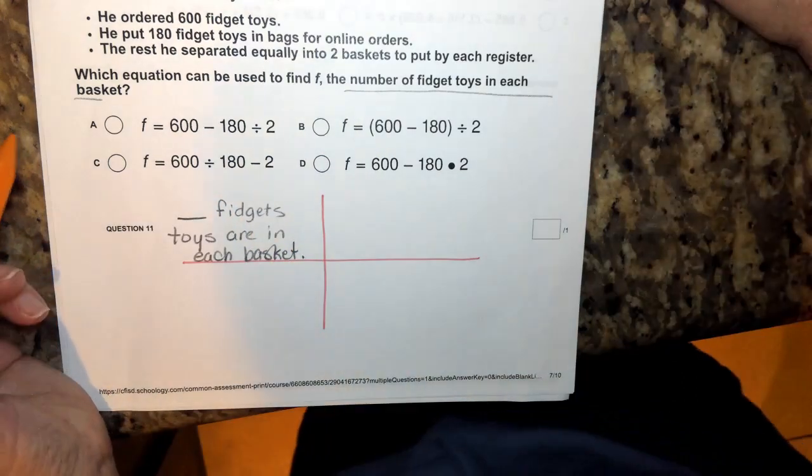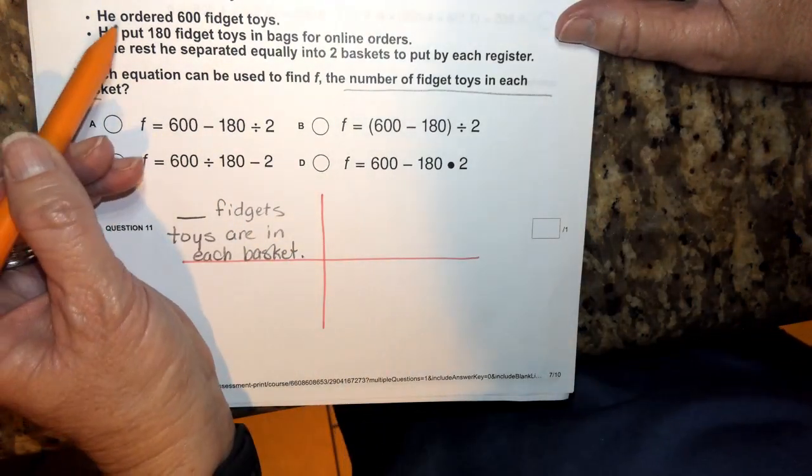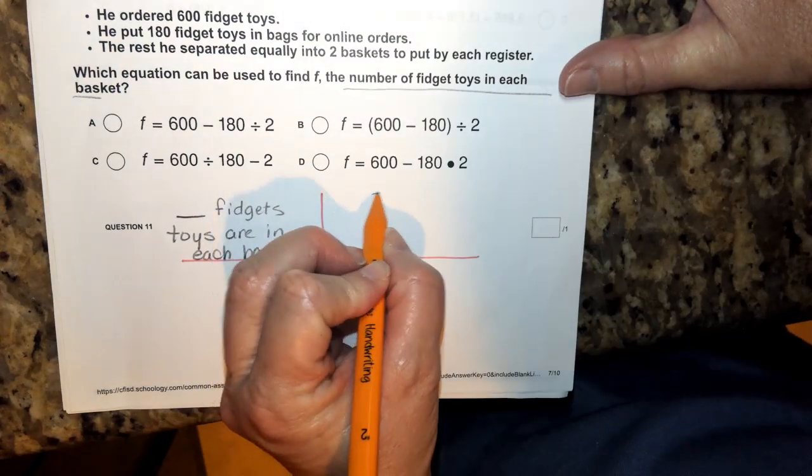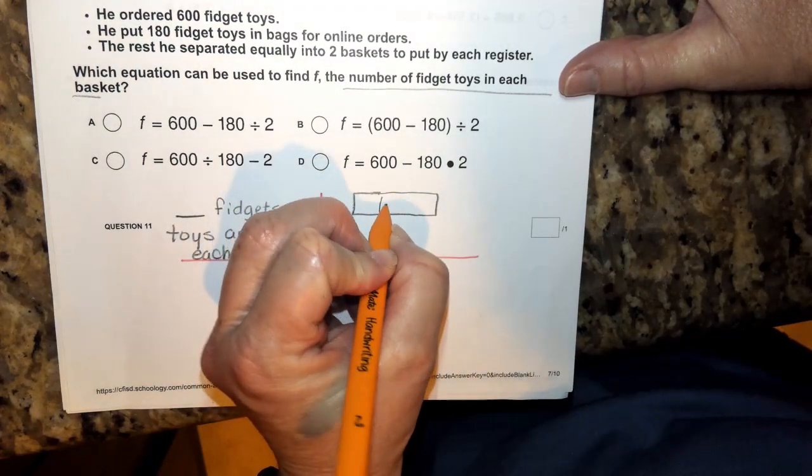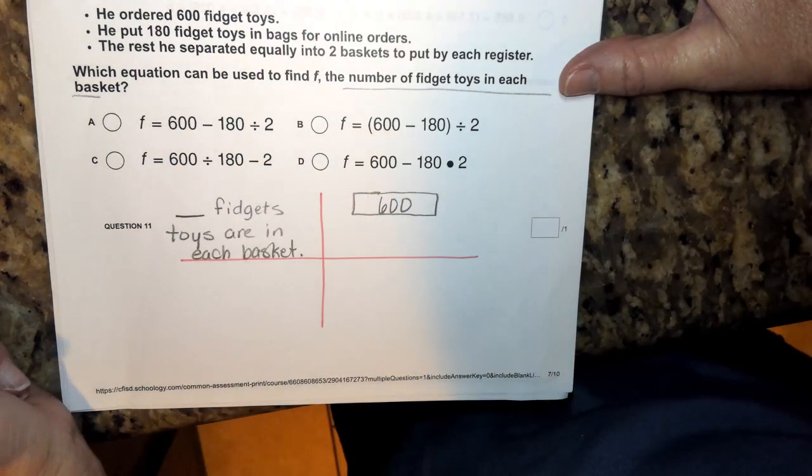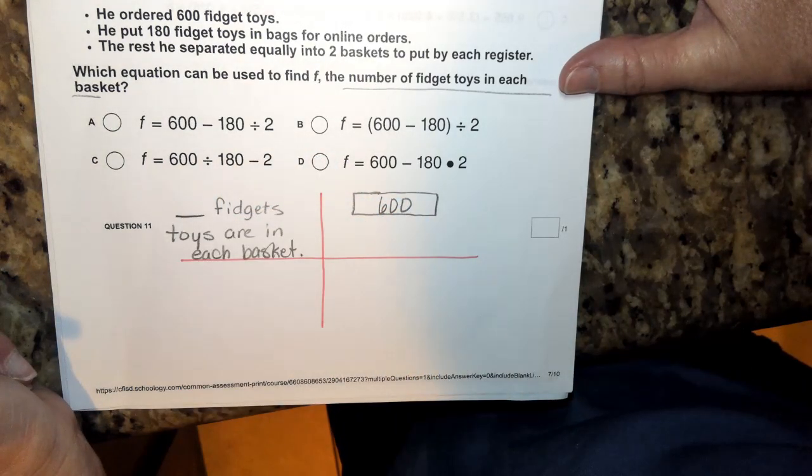Okay. And so here's what I know. He started with 600 fidget toys. So I'm going to draw that first.